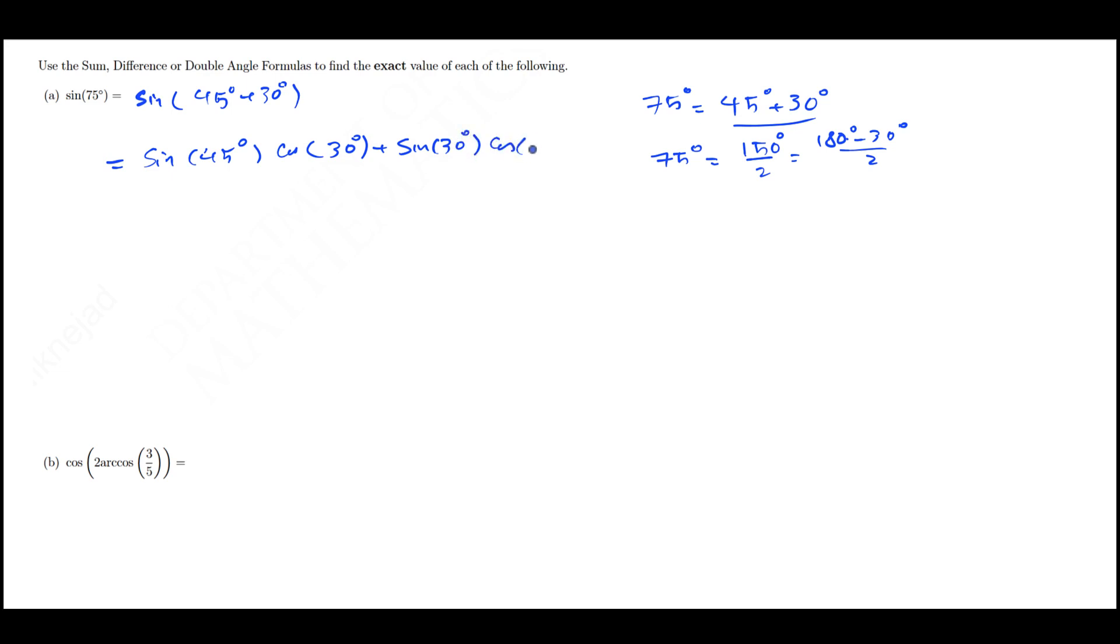And sine of 45 degrees, if you look at your table, it's square root of 2 over 2, cosine of 30 degrees is square root of 3 over 2, plus sine of 30